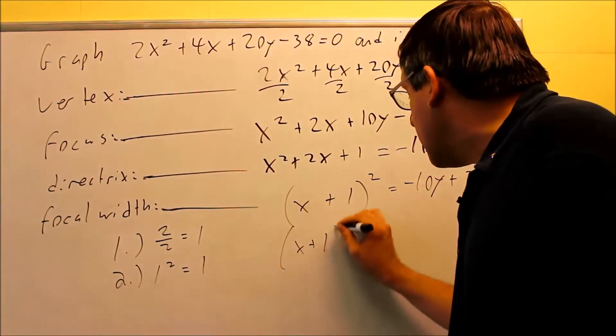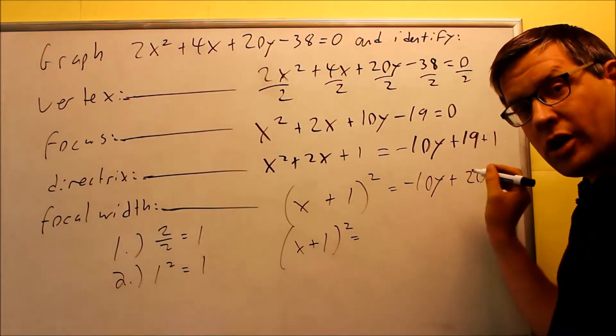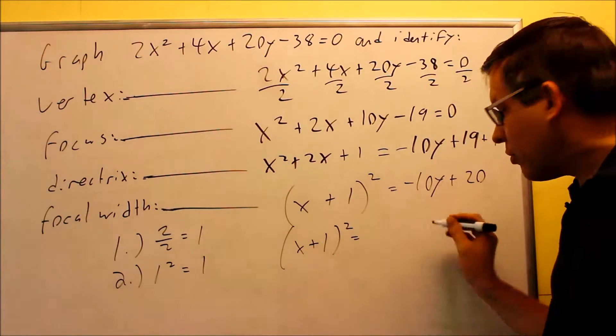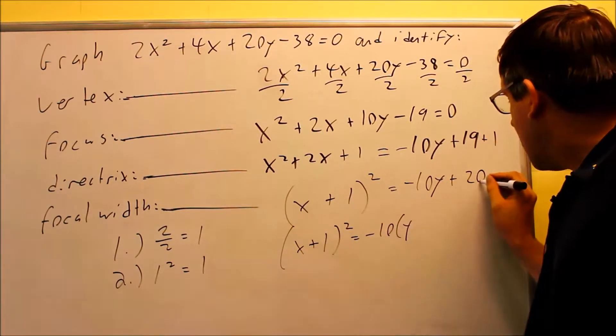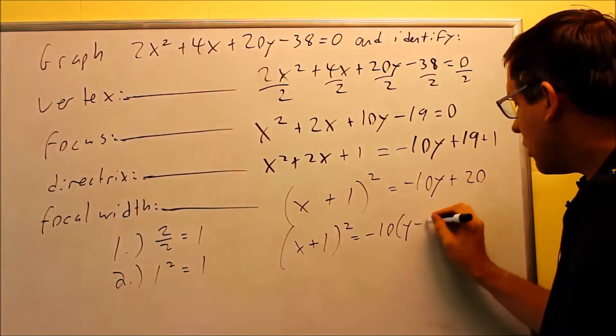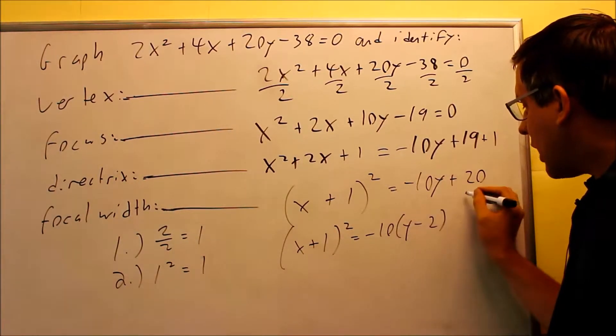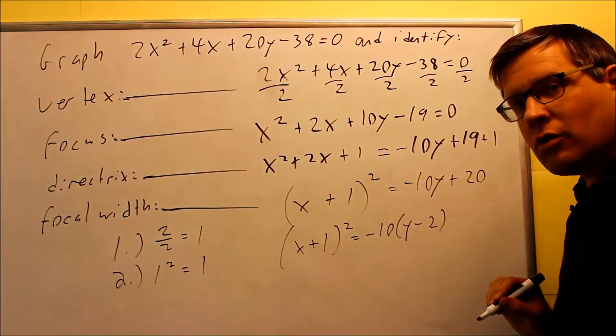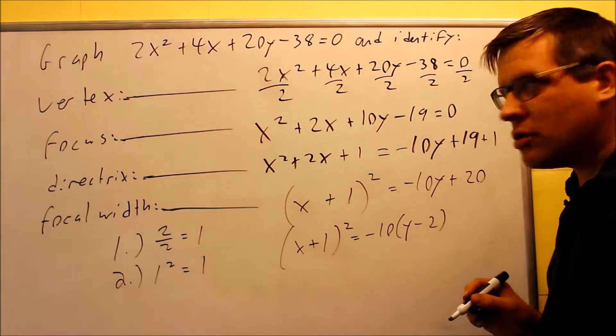The last thing you want to do is you need to factor out negative 10 because you want to get the y by itself inside the parenthesis. And we get y, and because we're taking out a negative here, that will change that to a negative 2. So that way if we multiply it back through, we'll get exactly the same thing we started with. This is now the correct format. We can now answer the rest of the questions.